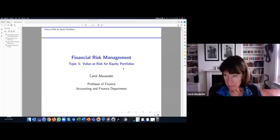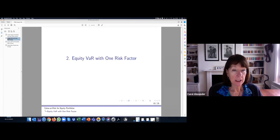Hello. Hi. So we are on topic five and we're going to look at this section here now, the equity VaR with one risk factor. So there's just one portfolio beta, which you know how to calculate from topic one.